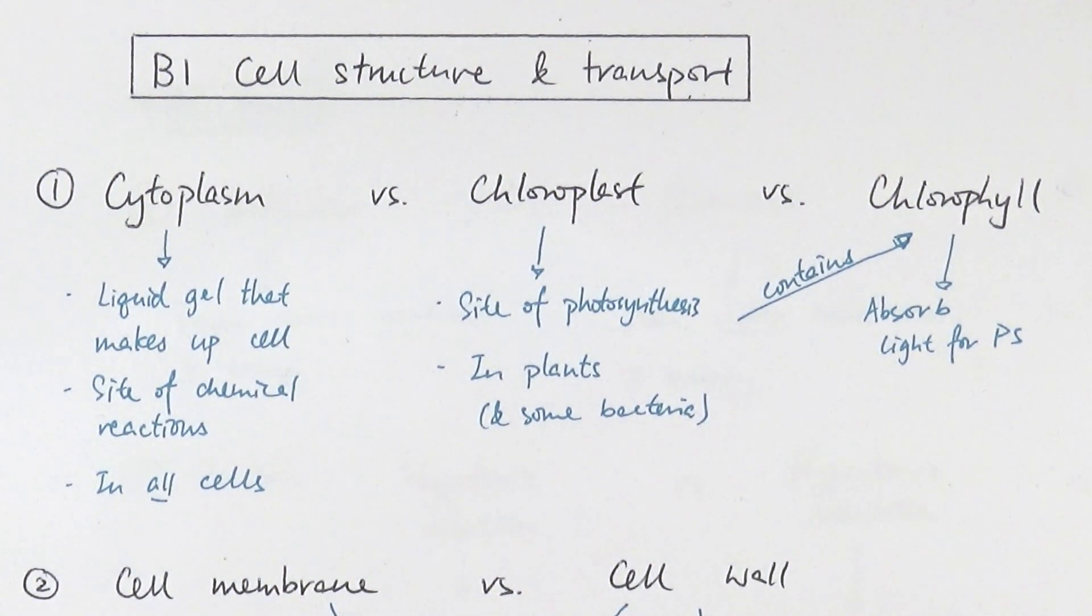Chloroplast on the other hand is the site for photosynthesis, so it only exists in plants and some bacterial cells which are also able to do photosynthesis, but not in animal cells. Chlorophyll is the green pigment that is found within chloroplast, so they absorb sunlight or absorb light in general to do photosynthesis.